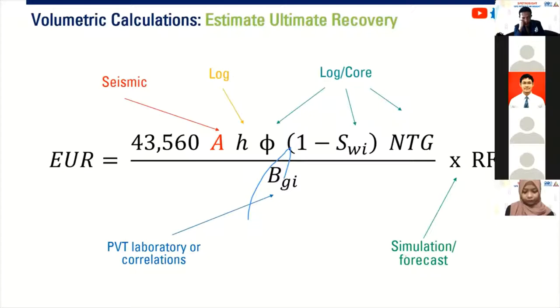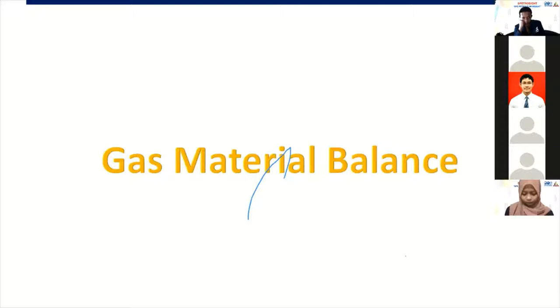We need to compare the results, the gas-in-place results from volumetric with the method which is known by material balance. If they go along together, then it means that our analysis is right, it's true, it's correct. But if they differ significantly, maybe we need to revise or maybe we need to revisit either the volumetric one or material balance one or both of them.